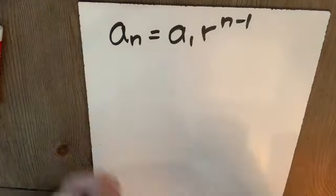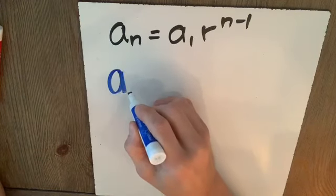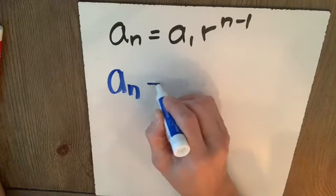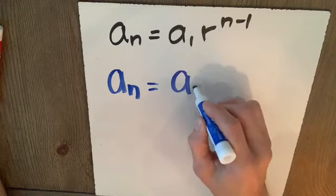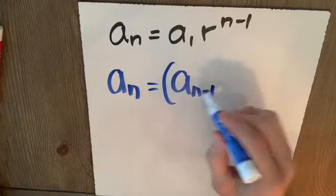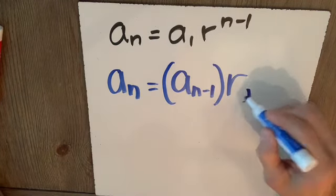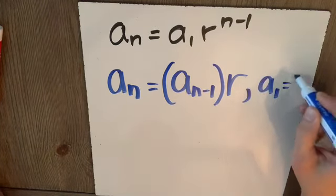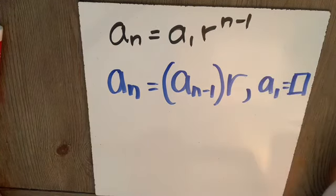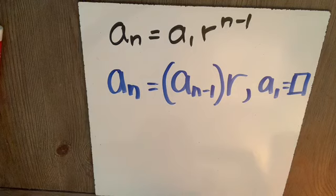This is an explicit formula. If we wanted to talk about a recursive formula, we could say aN is equal to aN minus 1. So any term is equal to the term before it times the common ratio r, provided a1 is equal to some number given.